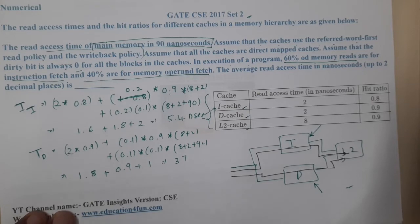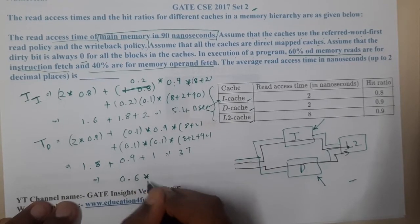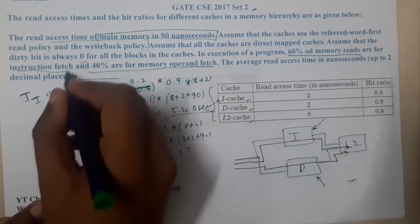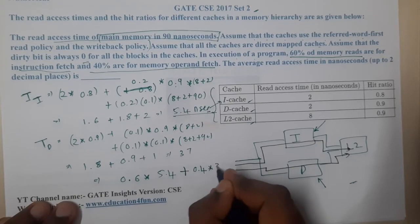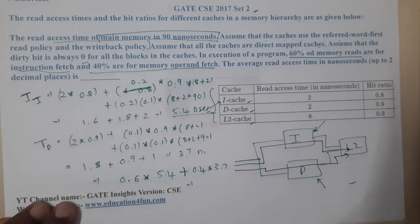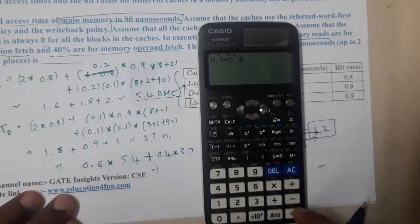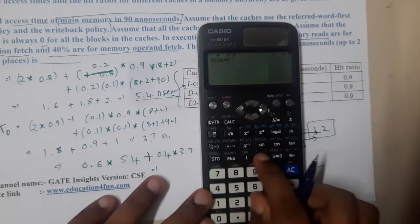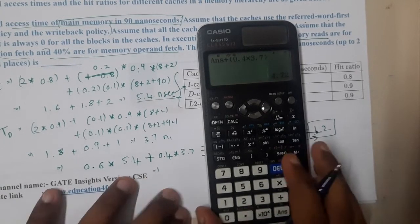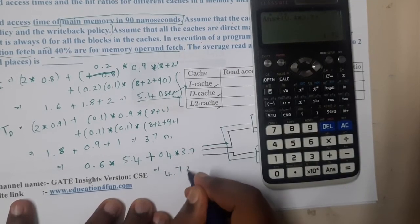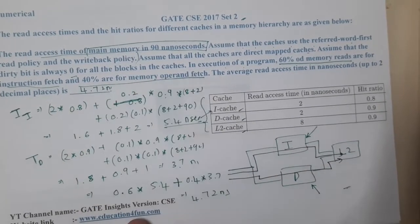Now we apply the ratio: 60 percent are instruction fetches taking 5.4 nanoseconds, and 40 percent are data fetches taking 3.7 nanoseconds. Average read access time = 0.6×5.4 + 0.4×3.7 = 3.24 + 1.48 = 4.72 nanoseconds.